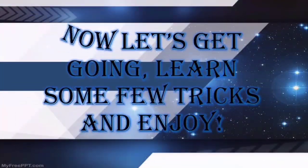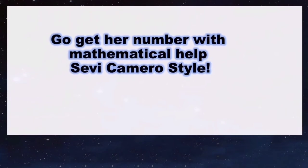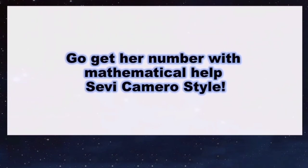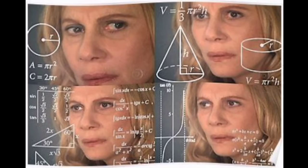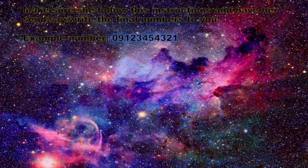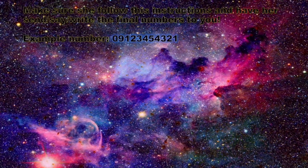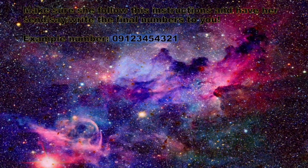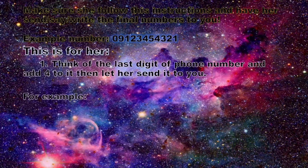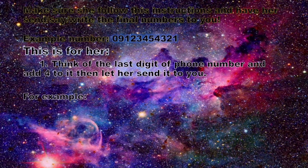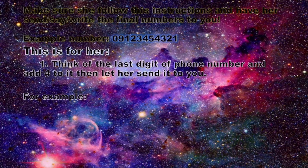Did you learn something? Of course you do! You're all bright after all. Now, let's get going, learn some few tricks, and enjoy! The title of our trick is go get her number with mathematical help, savvy camera style. You're wondering how and you might think it is impossible but with math, you can definitely make a move to get your crush's number. Let's start with, make sure she follows this instruction and have her send the final numbers to you. The numbers are 0 9 1 2 3 4 5 4 3 2 1. Think of the last digit of phone number and add 4 to it, then let her send it to you. For example, 1 is the last digit, add 4, then 5 is the sum.